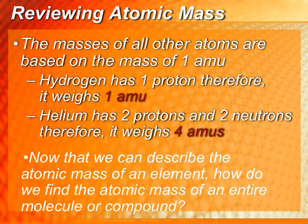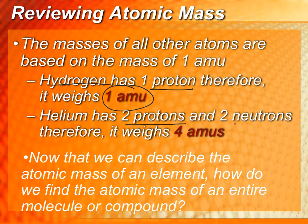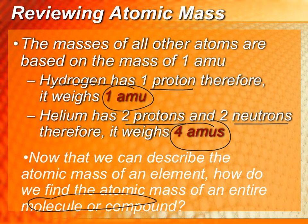So if we were to look at hydrogen, for example, we would see that it only has one proton, so it's going to have one AMU. Helium, on the other hand, has two protons and two neutrons, so it's going to have four AMUs. So what we're going to do is, now that we can describe the mass of an individual atom, we're going to look at how we can find the mass of a molecule or a compound.